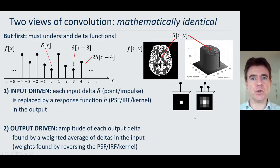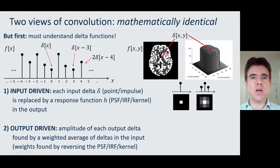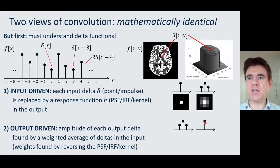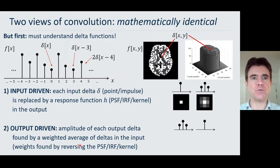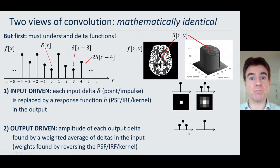A different but mathematically identical way of looking at convolution is to view it in an output-driven way. Here we consider the amplitude of each output delta as being found by a weighted average of deltas in the input, where the weighting is determined by the kernel. A subtlety of this output-driven method is that you actually need to reverse the kernel to find the weighting factors for those input delta functions. The beauty of the input-driven method is that no reversal of the kernel is needed whatsoever.